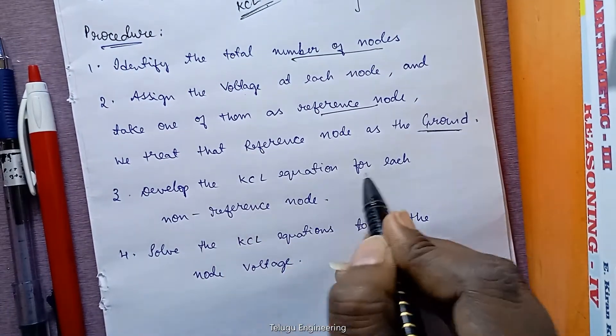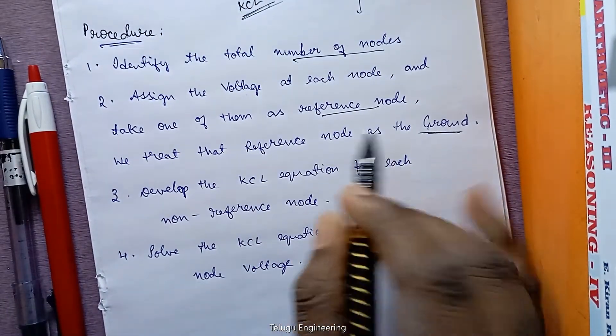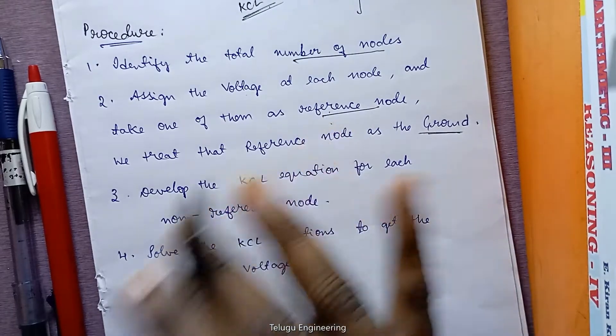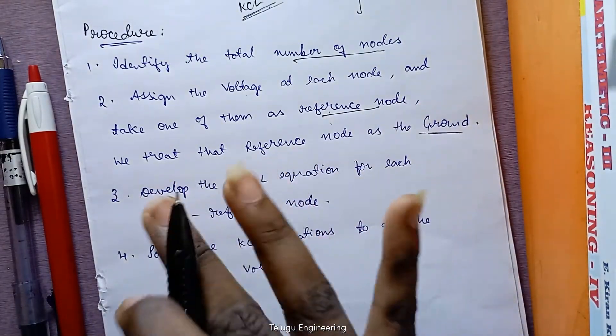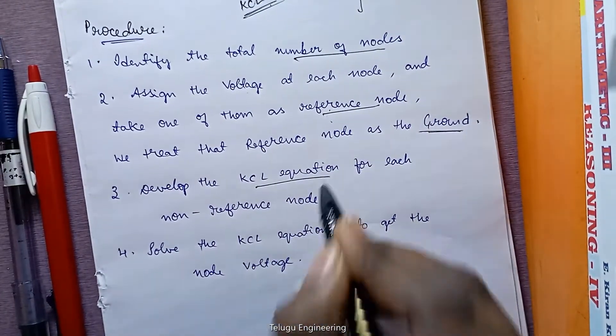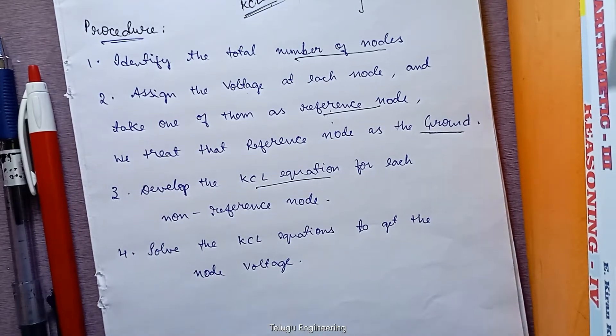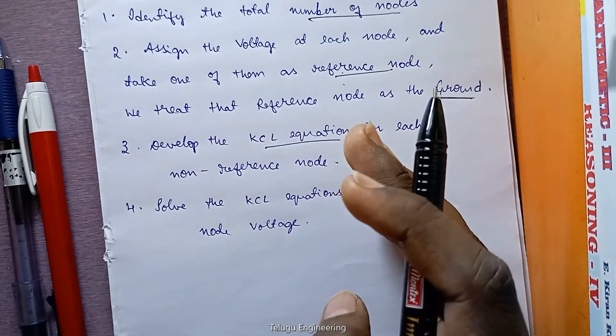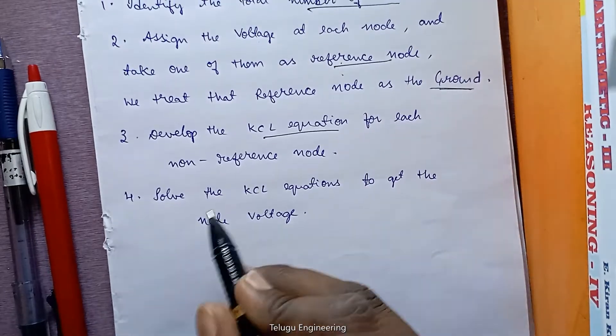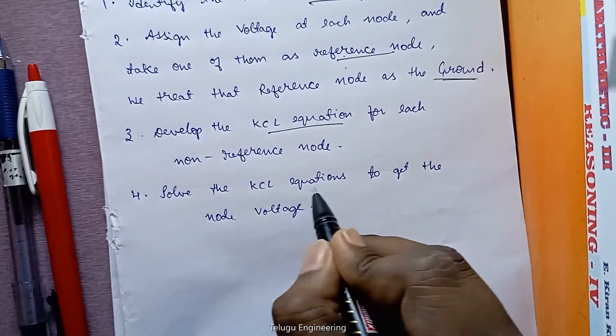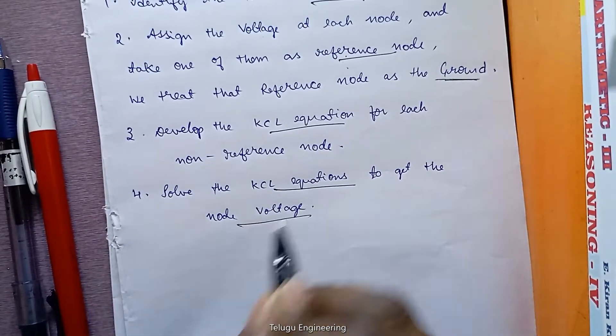Develop the KCL equations for each non-reference node. So one is the reference node, and with the remaining non-reference nodes, we will apply the KCL equation. So apply KCL. We will be getting three different equations. And these equations we are going to solve. So solve the KCL equations to get the node voltage. Node voltage, that is how the question will be framed.